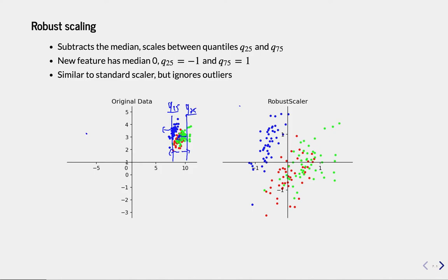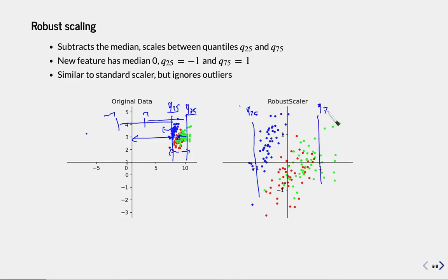What robust scaling does is subtract the median and then scale so that the q25 quantile ends up at minus one and the q75 quantile ends up at one — and it does this for each feature separately.